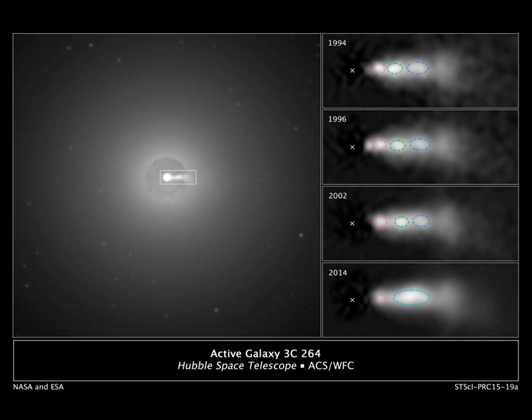An astrophysical jet is an astronomical phenomenon where outflows of ionized matter are emitted as an extended beam along the axis of rotation. When this greatly accelerated matter in the beam approaches the speed of light, astrophysical jets become relativistic jets as they show effects from special relativity. The formation and powering of astrophysical jets are highly complex phenomena that are associated with many types of high-energy astronomical sources.